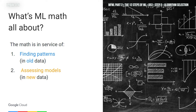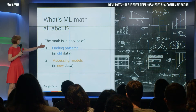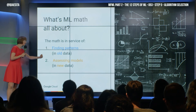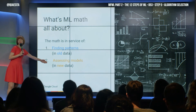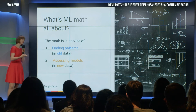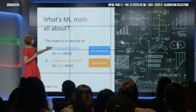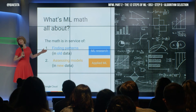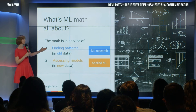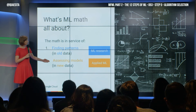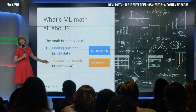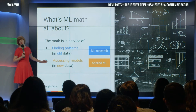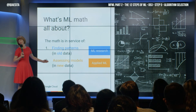The math in machine learning is in service of one of two things: finding patterns in old data, or figuring out if new stuff works. Machine learning researchers care more about the first one, and that's what's in the machine learning courses. Applied machine learning cares about the second one — this is the statistical math.